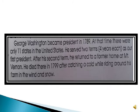This paragraph tells us that he became president in 1789, by which time there were only 11 states in the United States. Nowadays we all know that the United States has 50 states, but at that time there were only 11 states.